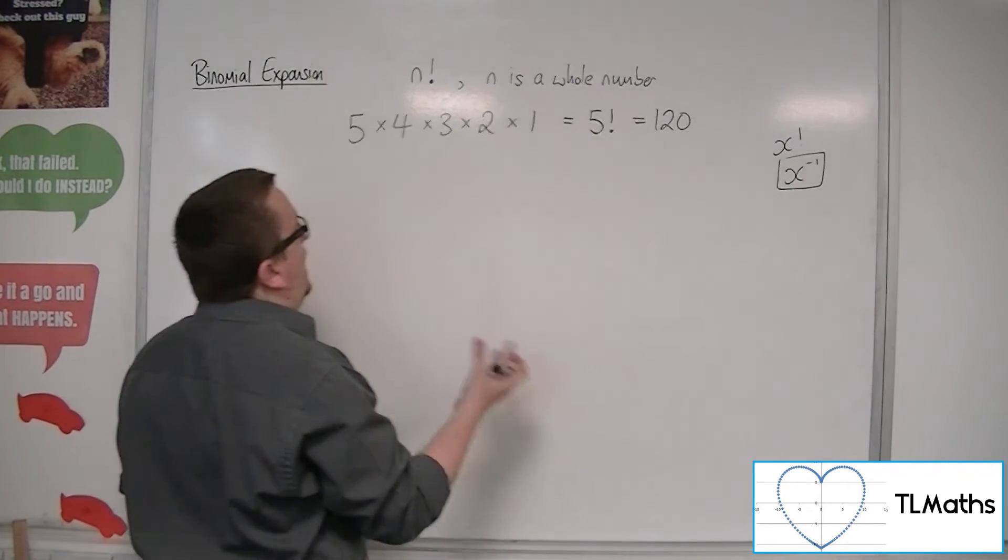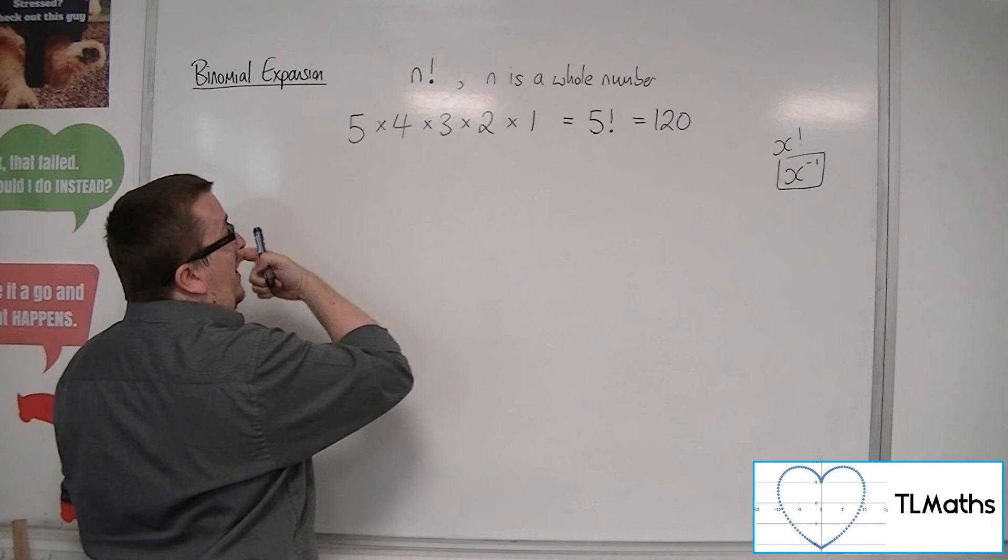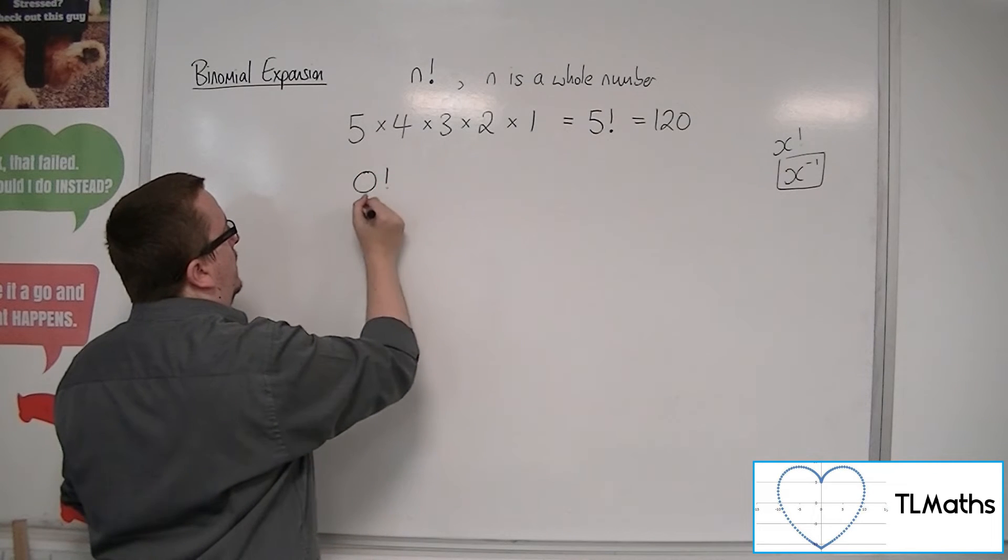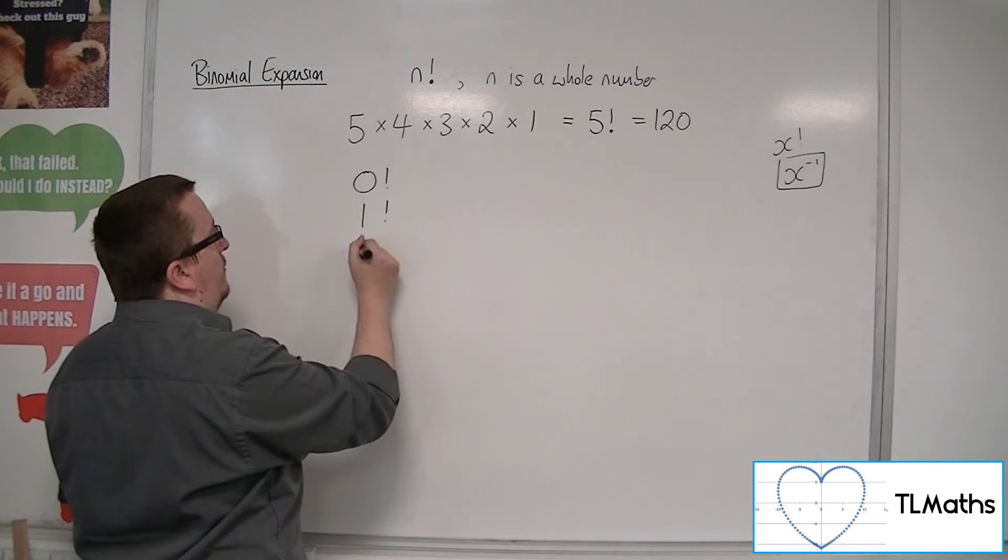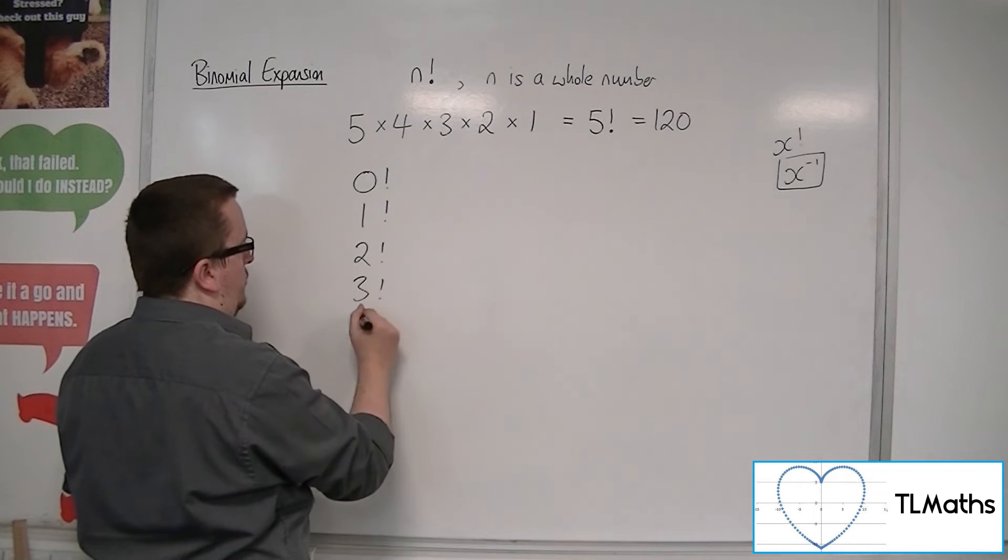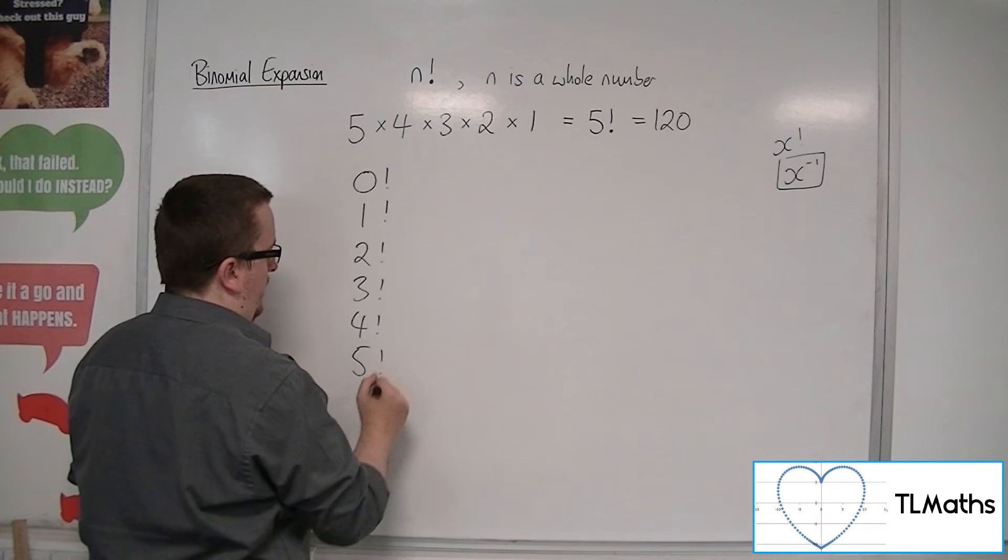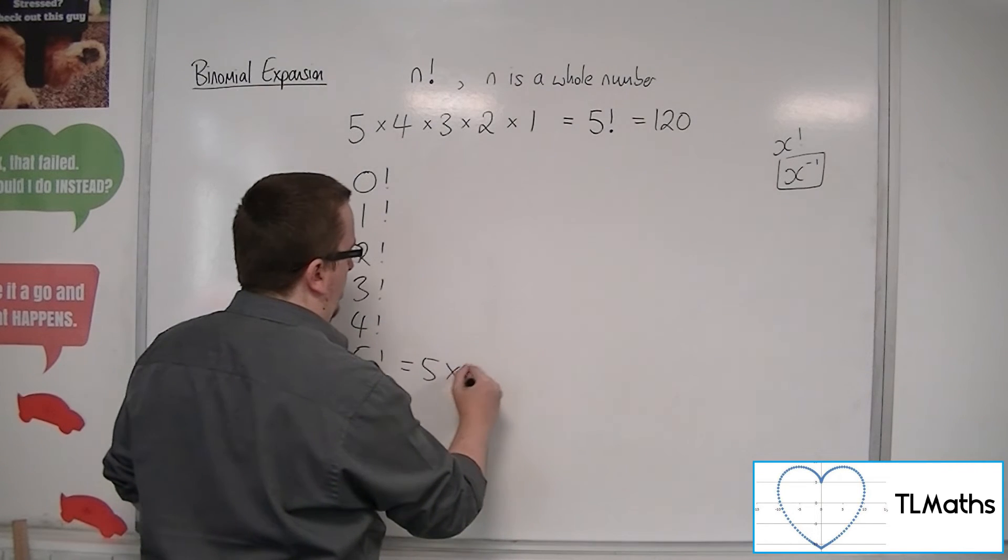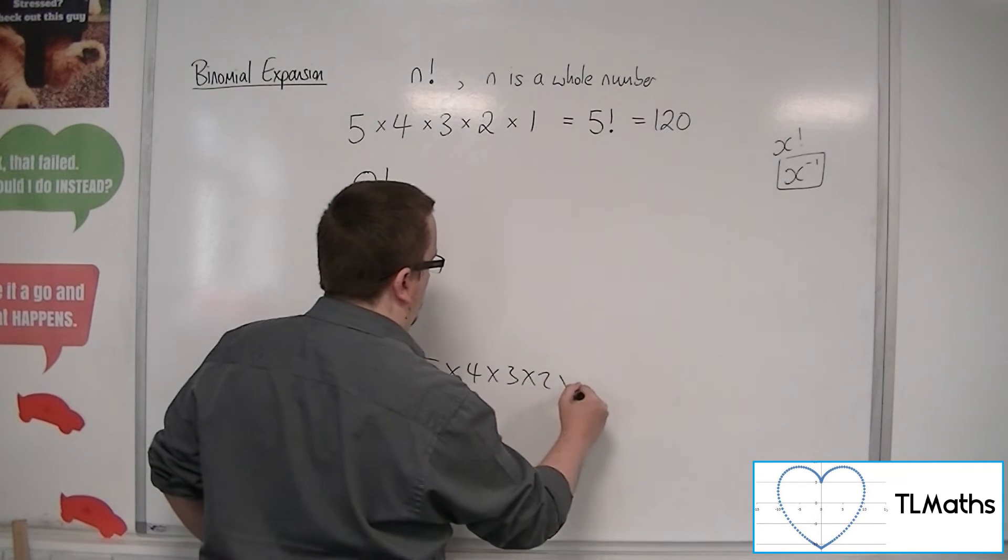So we could have, as I said, zero was included. Zero factorial, one factorial, two factorial, three factorial, four, five. Five we know is five times four times three times two times one.